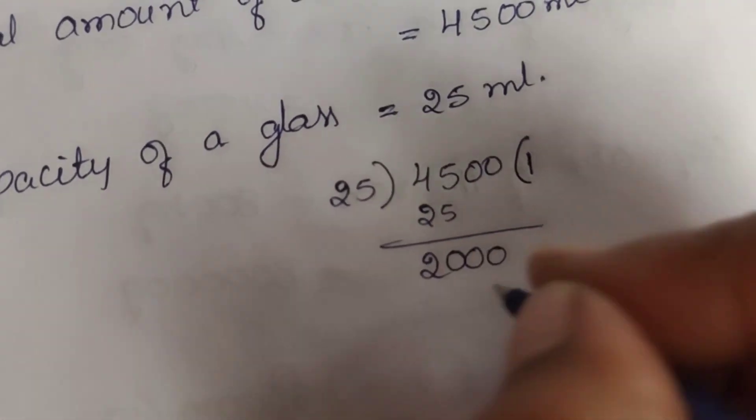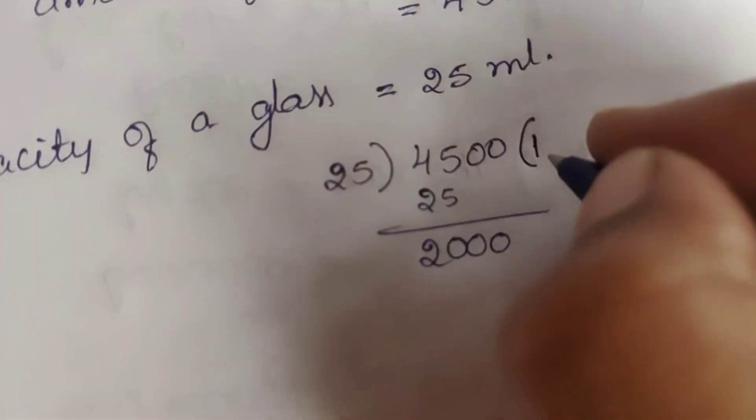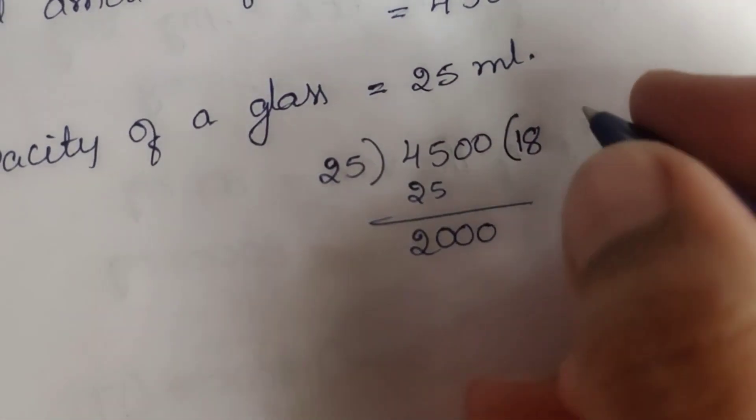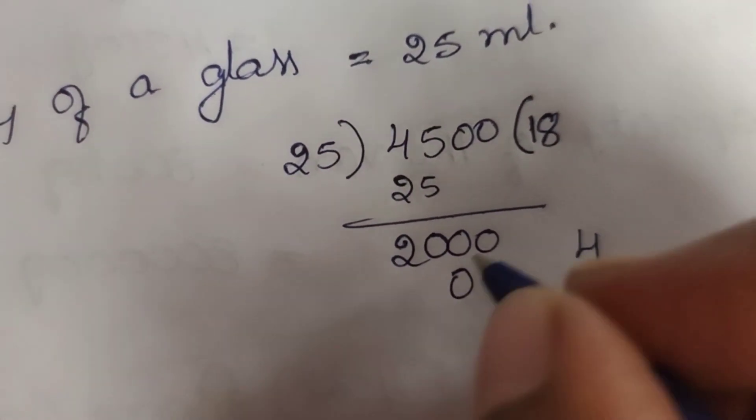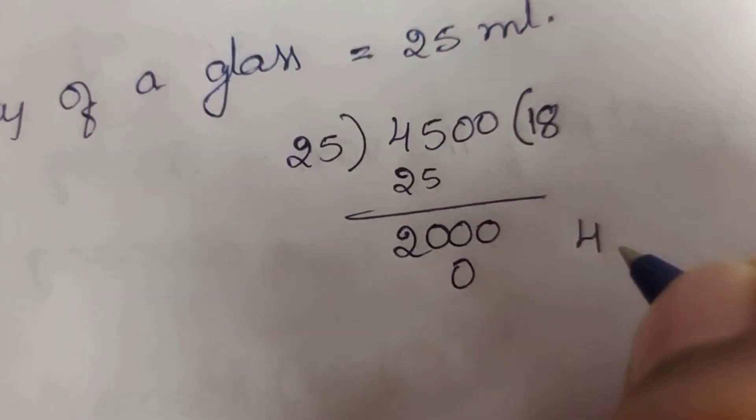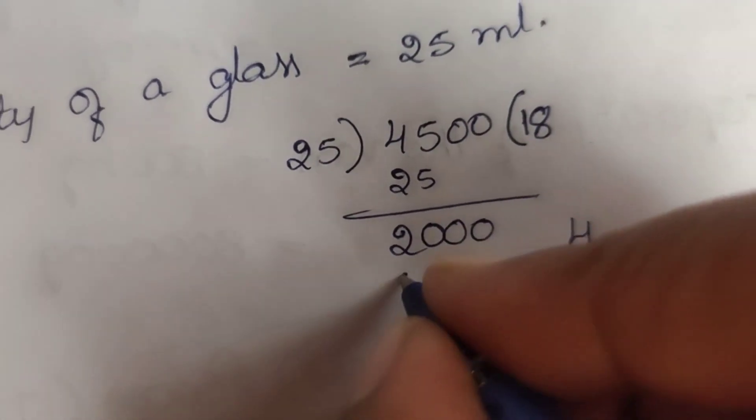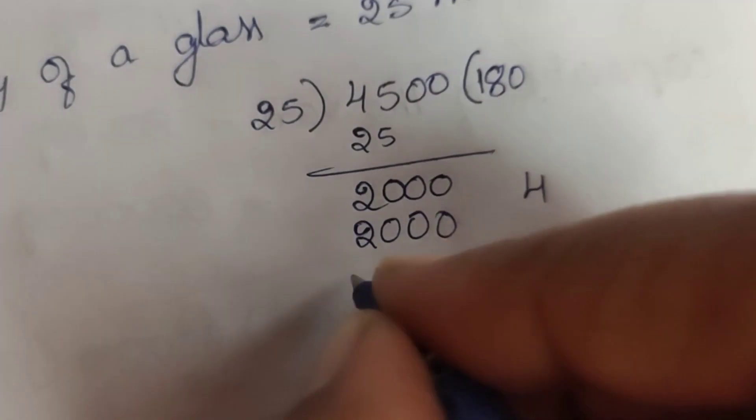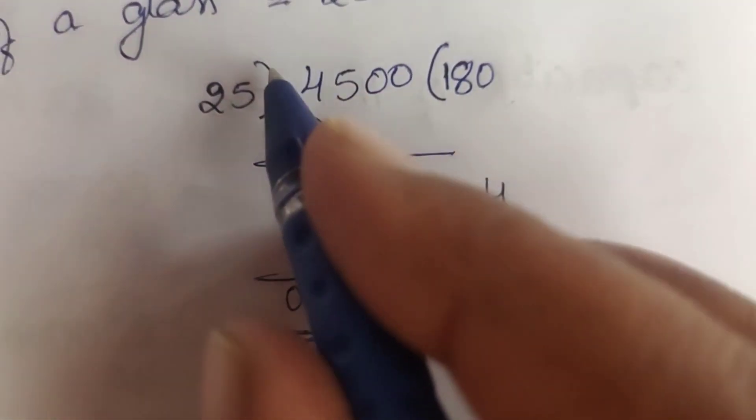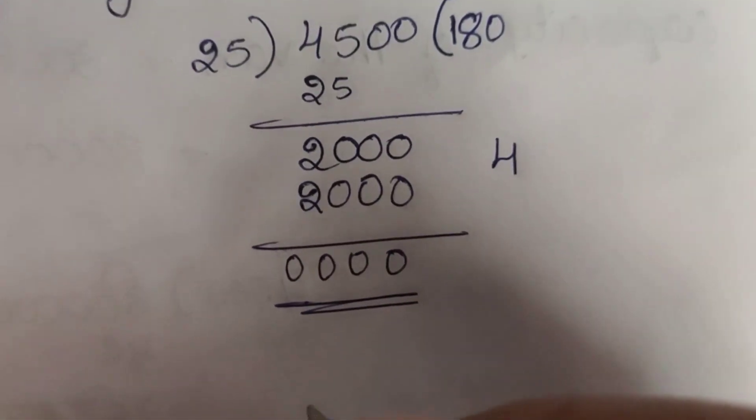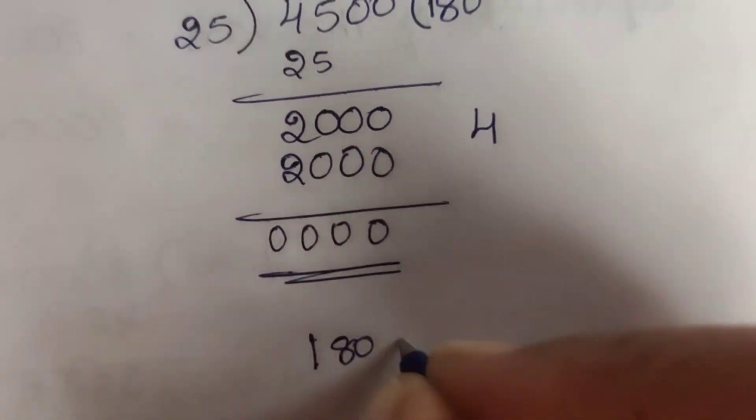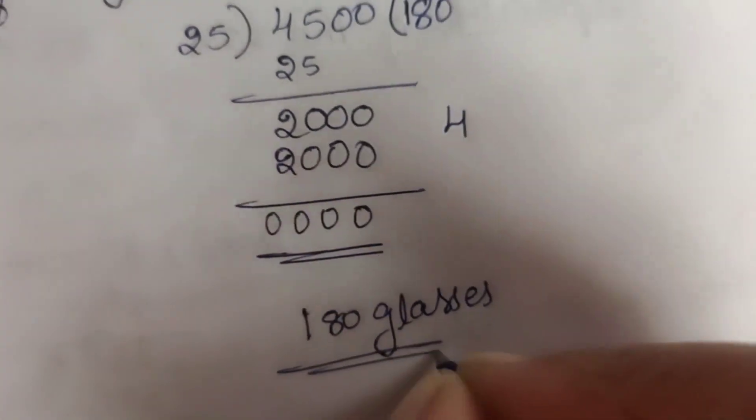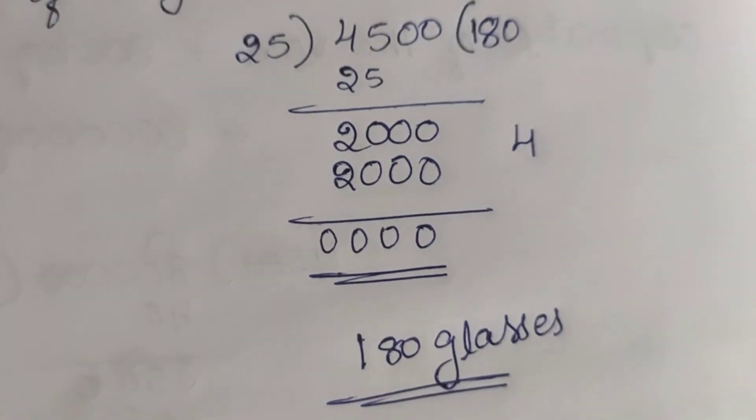25 goes into 25 once. Then 25×8: 8×2 is 16, 4 carry. 8×2 is 16 plus 4 is 20. It is completely divided by 25. So total 180 glasses. This is exercise 1.2. See you in the next class, thank you.